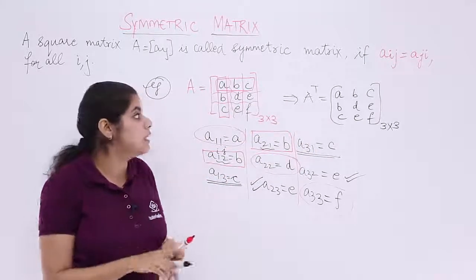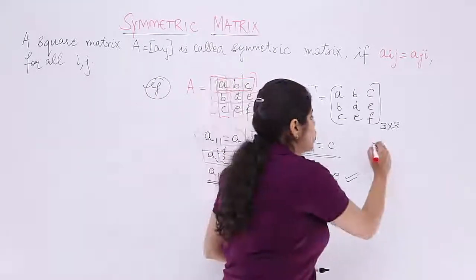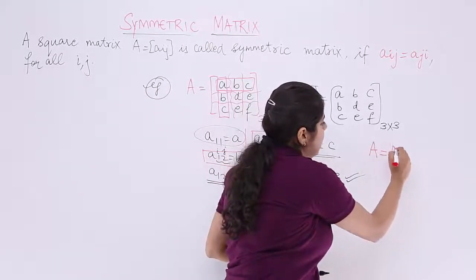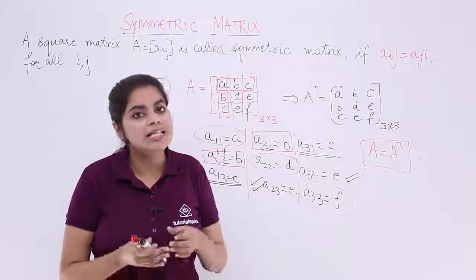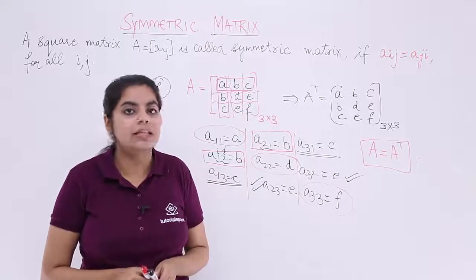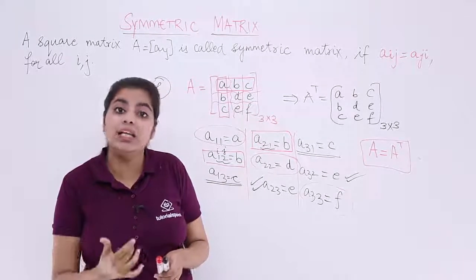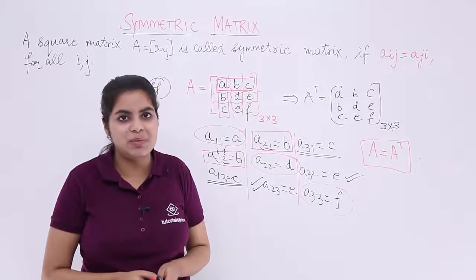That means your A is actually equal to A transpose. So whenever my A equals A transpose, such matrices are called as symmetric matrix. That means any square matrix wherein the transpose of a matrix is equal to the given matrix, that matrix is called as a symmetric matrix.